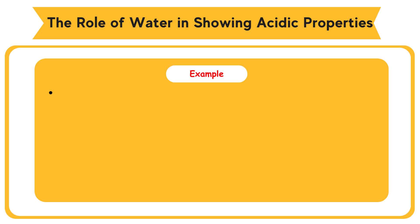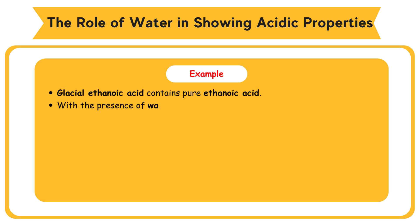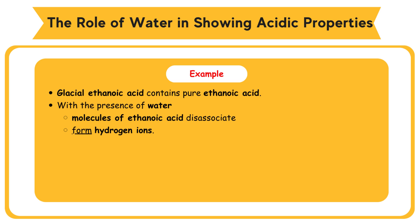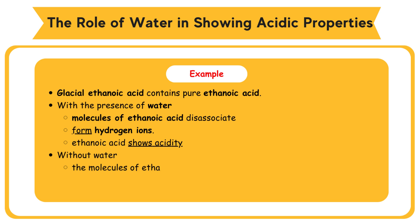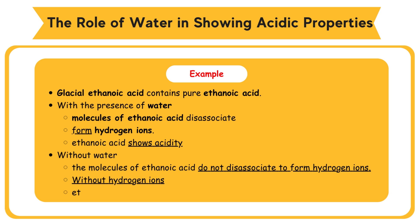Example: glacial ethanoic acid contains pure ethanoic acid. With the presence of water, the molecules of ethanoic acid dissociate and form hydrogen ions. With the presence of hydrogen ions, ethanoic acid shows acidity. Without water, the molecules of ethanoic acid do not dissociate to form hydrogen ions. Without hydrogen ions, ethanoic acid does not show acidity.